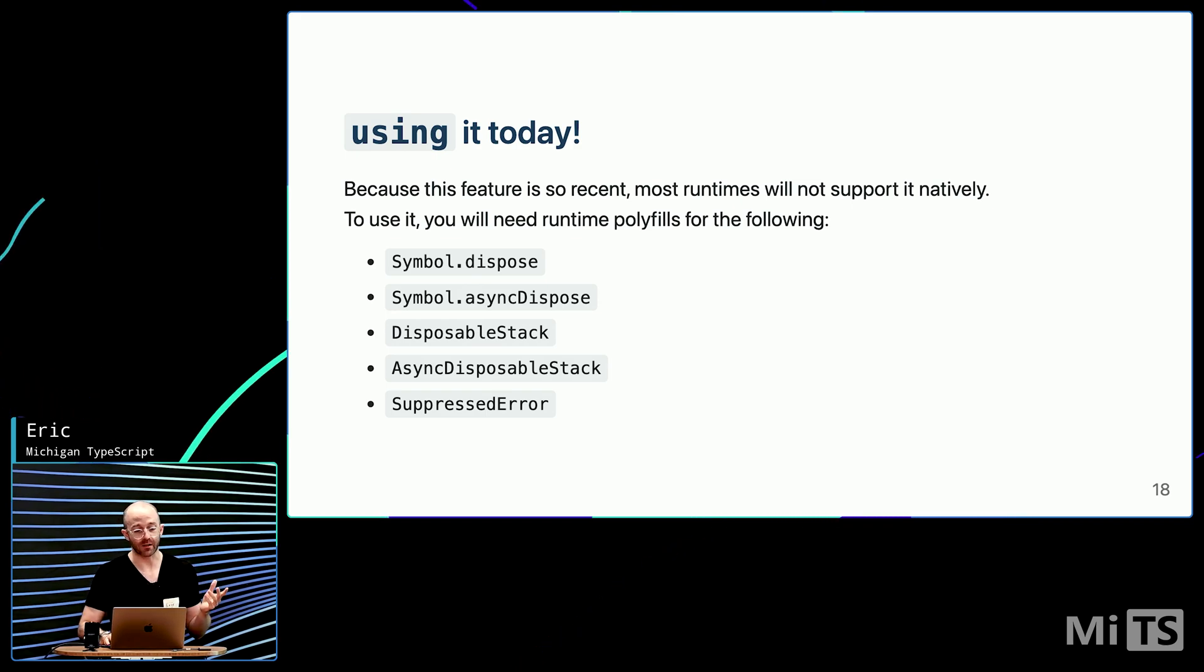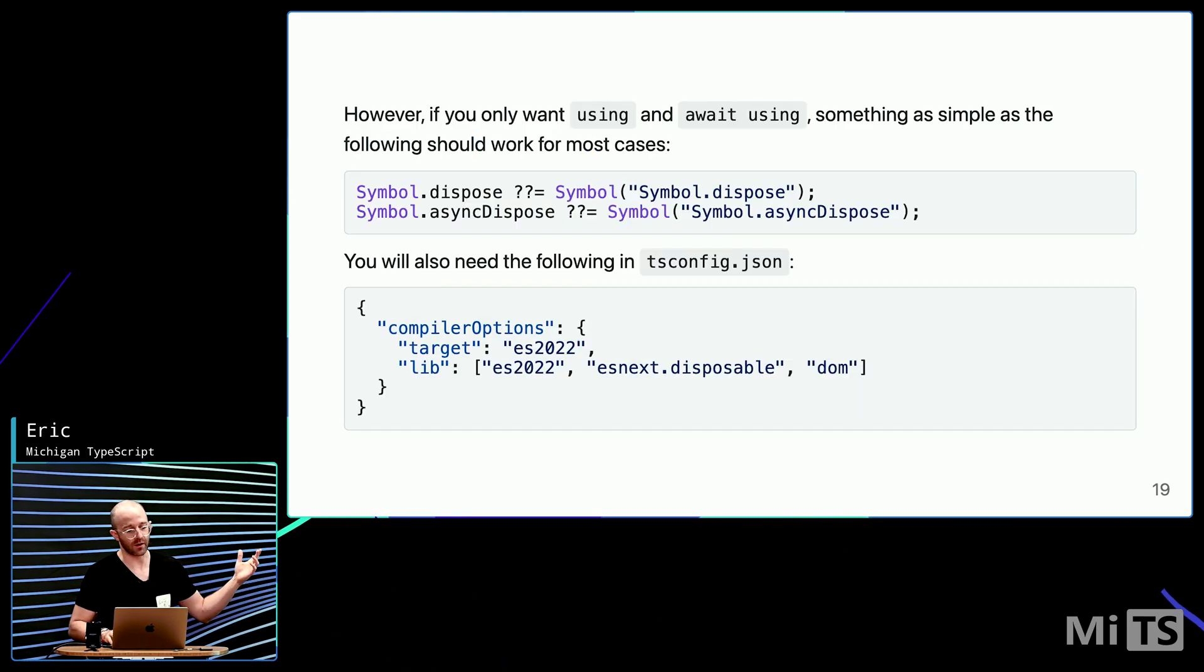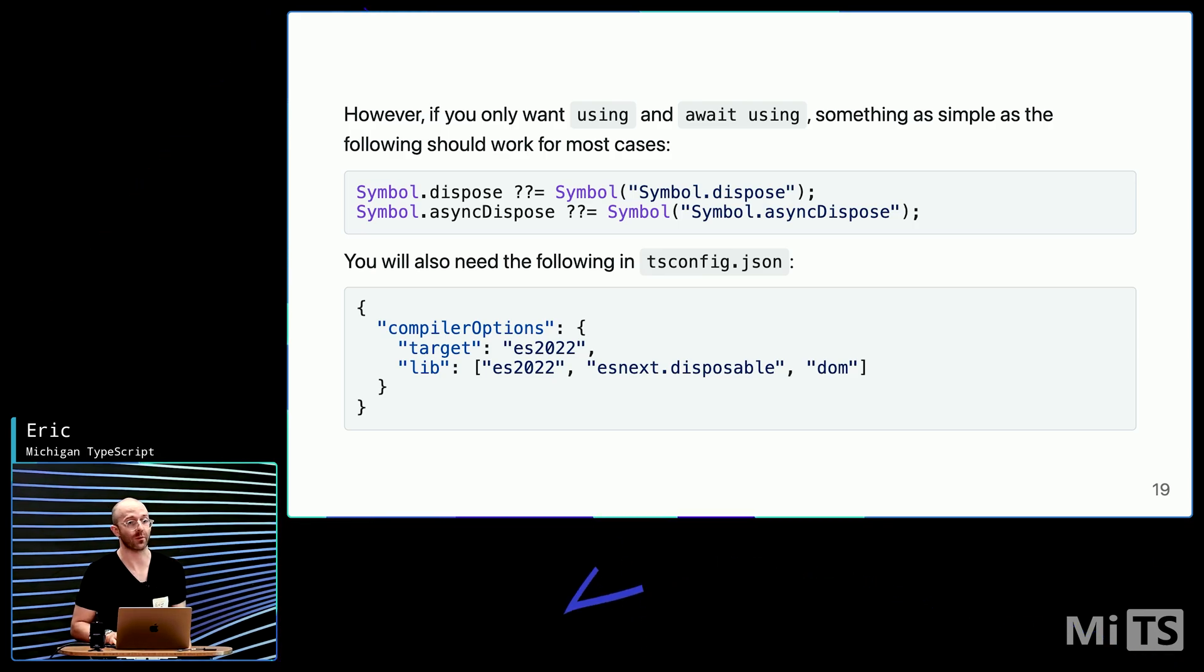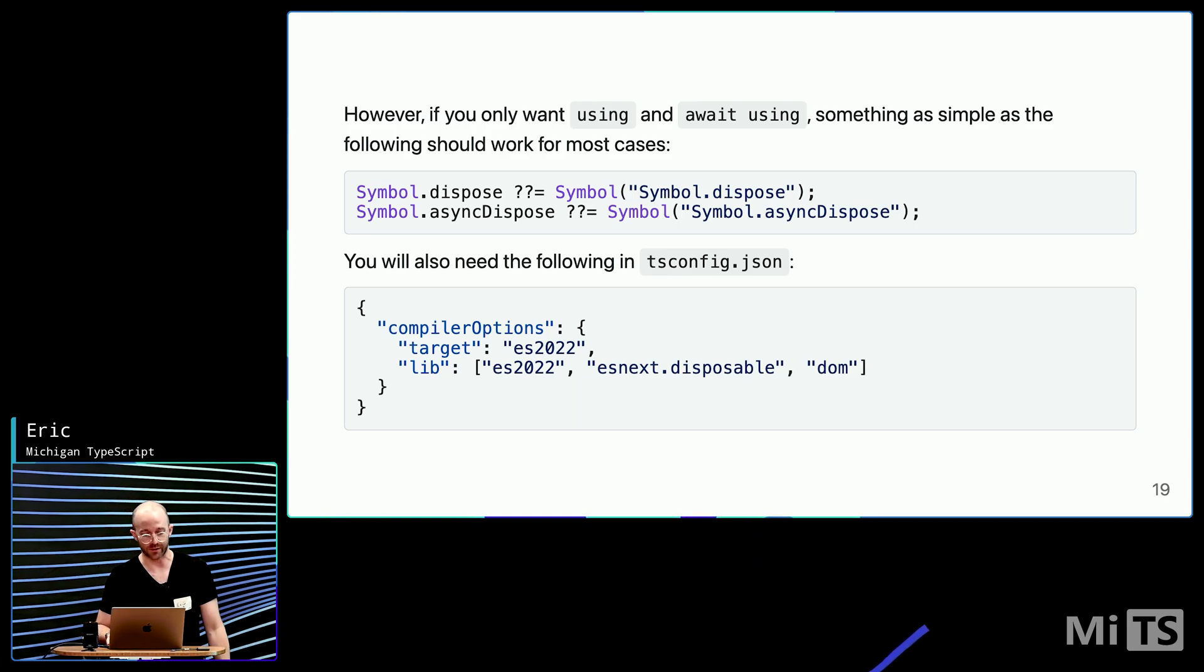But if you just want to use the using and using await syntax, a lot of what you need is just the symbols. So, you can polyfill those symbols pretty easily for the most part. Those two lines of code would give you support, would be like the polyfill for basic support of the using declaration.